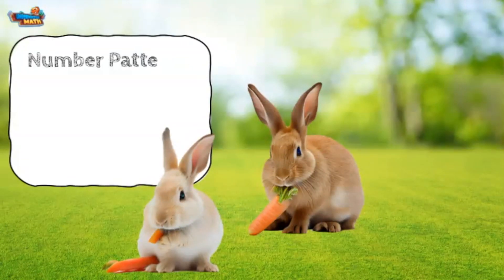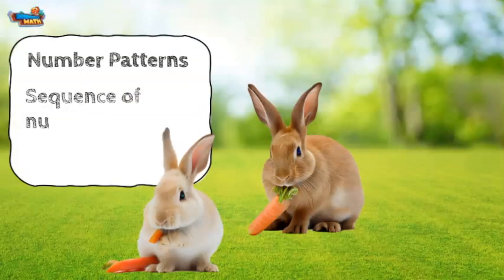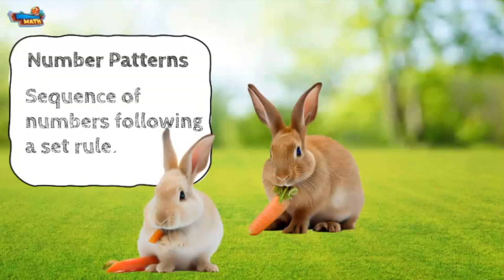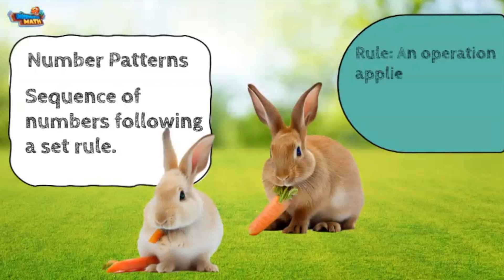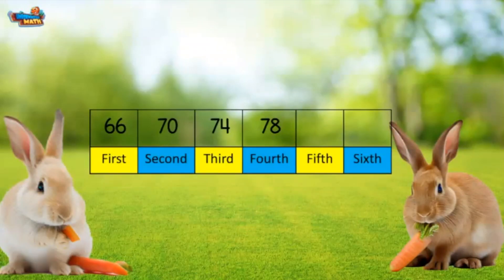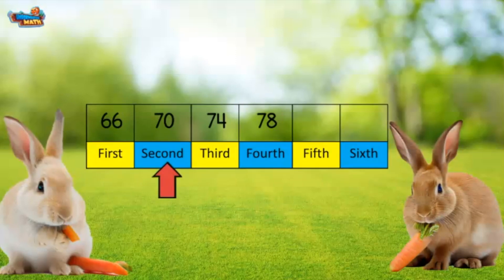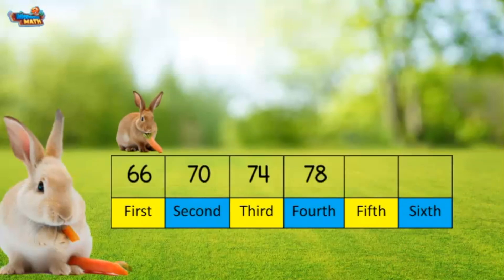We are going to talk about identifying and extending numerical patterns. A number pattern is a sequence of numbers following a set rule. A rule is an operation applied to a set of numbers to form a pattern. The position of the numbers in a pattern are described using ordinal number words like the ones shown.